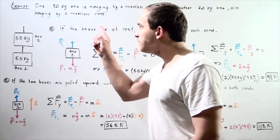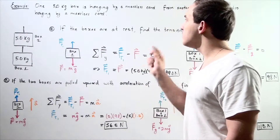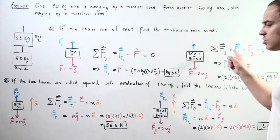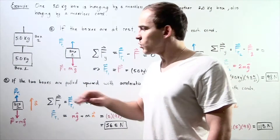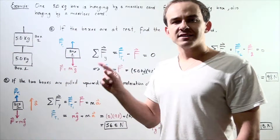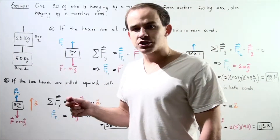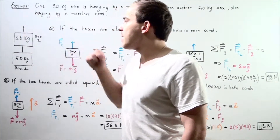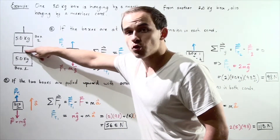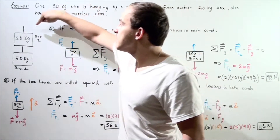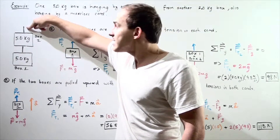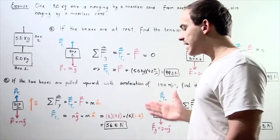Suppose that one five-kilogram box is hanging by a massless cord from another five-kilogram box, also hanging by a second massless cord. Here we have the diagram. Box number one, with a mass of five kilograms, is attached to box number two, also with a mass of five kilograms, by a massless rope. At the same time, box number two is being held by a second massless cord.